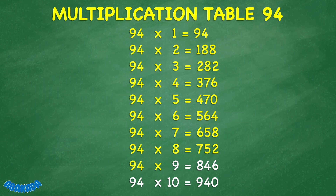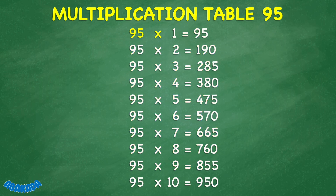94 times 9 equals 846. 94 times 10 equals 940. 95 times 1 equals 95. 95 times 5 equals 475. 95 times 6 equals 570. 95 times 7 equals 665.